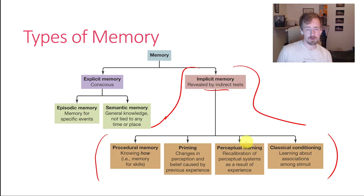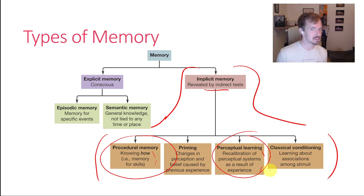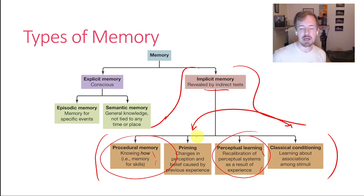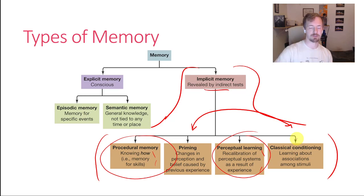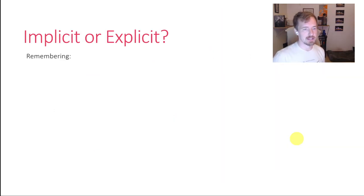So far we've talked a lot about procedural memory and perceptual learning — learning memory skills, how things look or sound, what music or speech sounds like, even if you can't put it into words. Those are all implicit memory. But we haven't talked as much about priming or classical conditioning. We'll talk about priming later in this unit, and classical conditioning we're going to save for another unit.